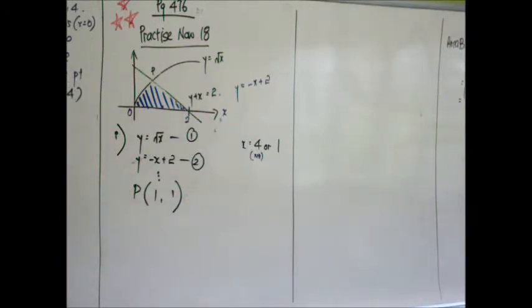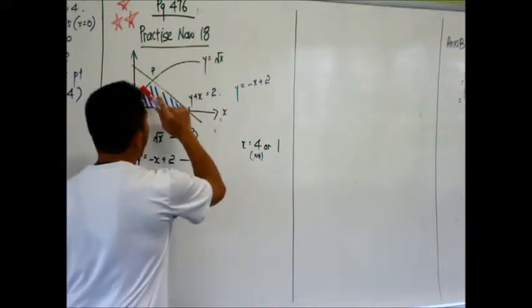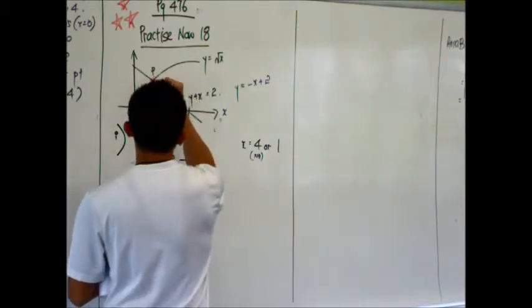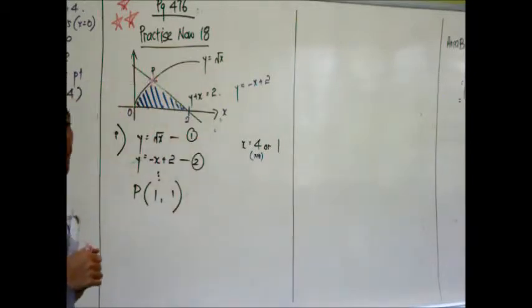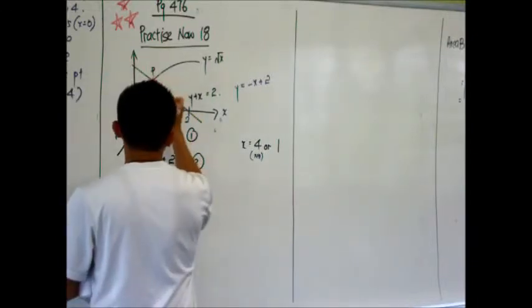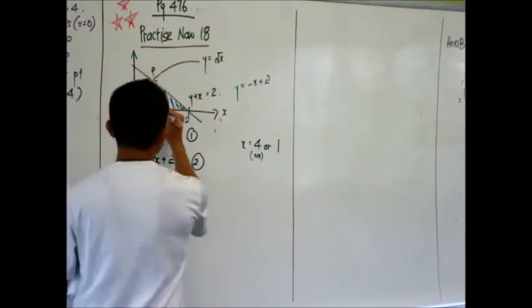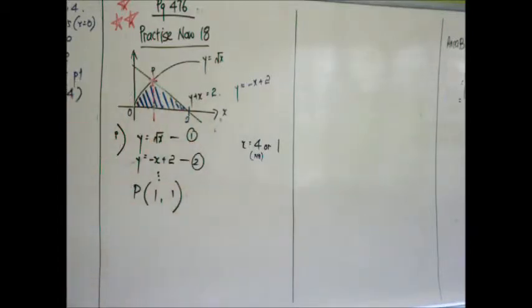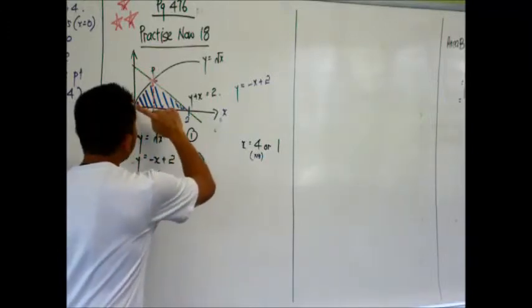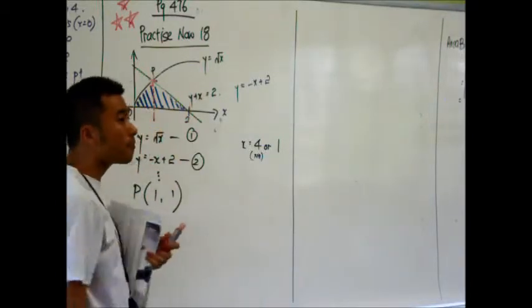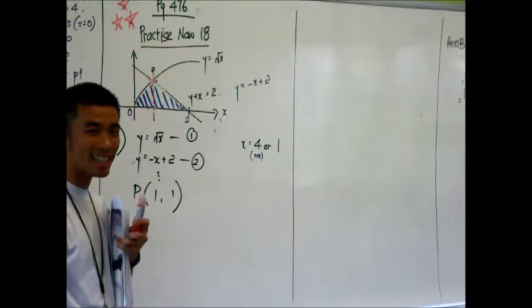What is this part? It's a straight line. It means to tell us that we cannot integrate one shot. Unlike previous question, all the way is the curve. I can integrate one shot from the lower limit to the upper limit. But, this area is bounded by a curve followed by another straight line.